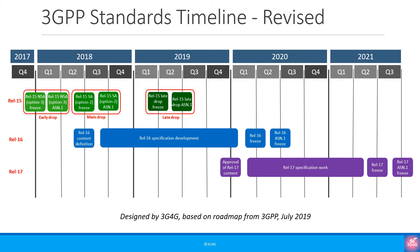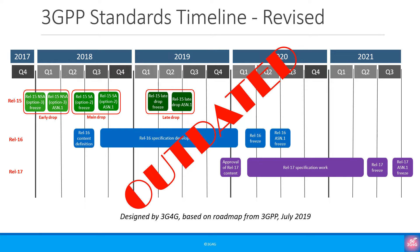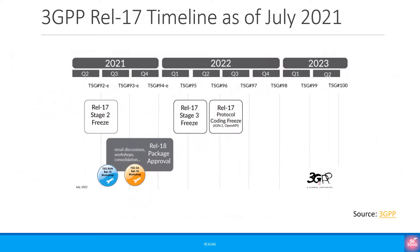A year back, the 3GPP Release 15, 16, and 17 timelines showed we were expecting a Release 17 freeze in June 2021, followed by ASN freeze in September 2021. Because of the ongoing pandemic, that Release 17 timeline is now completely outdated. A more up-to-date timeline shows we can expect the features to be frozen in March 2022.